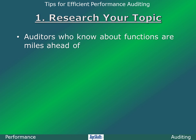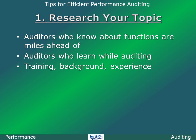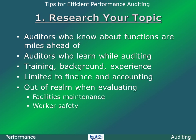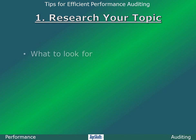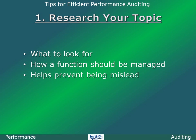Auditors who know about the functions they will audit are miles ahead of auditors who learn while auditing those functions. This is especially true for auditors whose training, background, and experience are limited to finance and accounting — they are out of their realm when evaluating other functions such as facilities maintenance, worker safety, environmental regulations, and a multitude of others. Researching enables you to know what to look for, particularly how the function should be managed, and helps prevent your being misled by auditees, whether intentional or not. The two best sources are textbooks from your library and the internet.